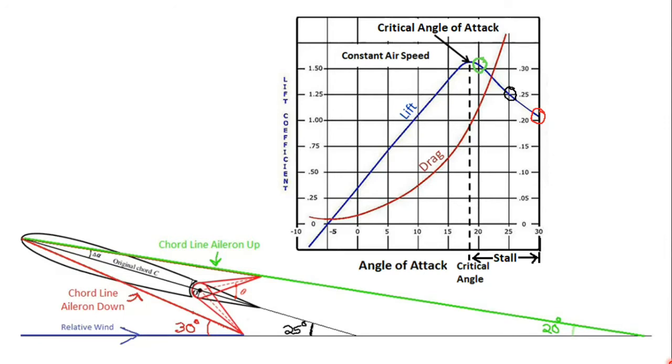So how do the ailerons change the amount of lift that each wing creates? They do it by changing the angle of attack. As long as you're below the critical angle of attack, as long as you're unstalled, increasing your angle of attack is going to give you more lift. Decreasing your angle of attack is going to give you less lift.